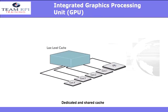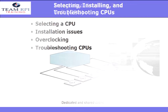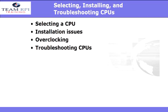The graphics processing unit, or integrated graphics processing unit, is a whole other chip attached to the last level cache. Here you see cores 4, 3, 2, and 1, as well as a dedicated or shared graphics processing unit. So which CPU is right for you?